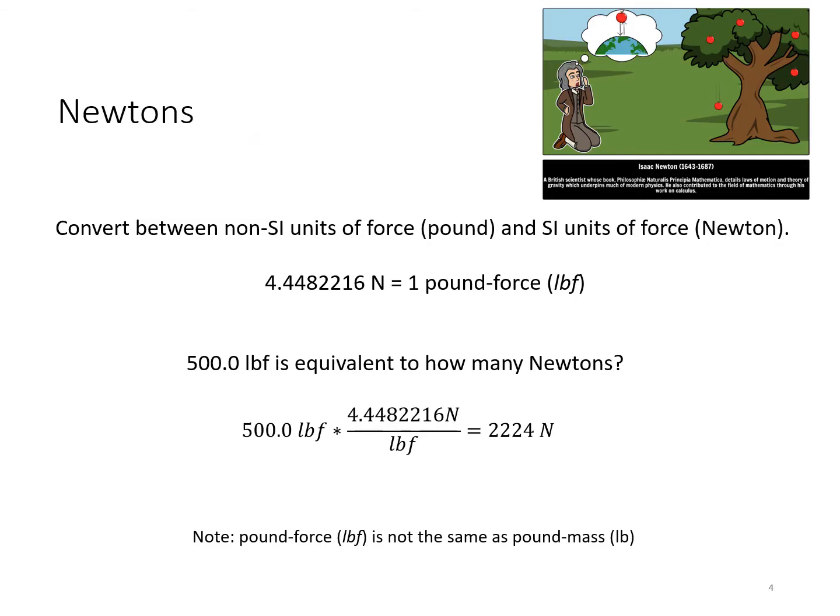Just to show you how to do the conversion, 4.45 newtons roughly equals one pound force. So 500 pound force is equivalent to how many newtons? It's nice to work these things out algebraically: 500 pound force times 4.45 newtons per pound force equals 2,224 newtons.